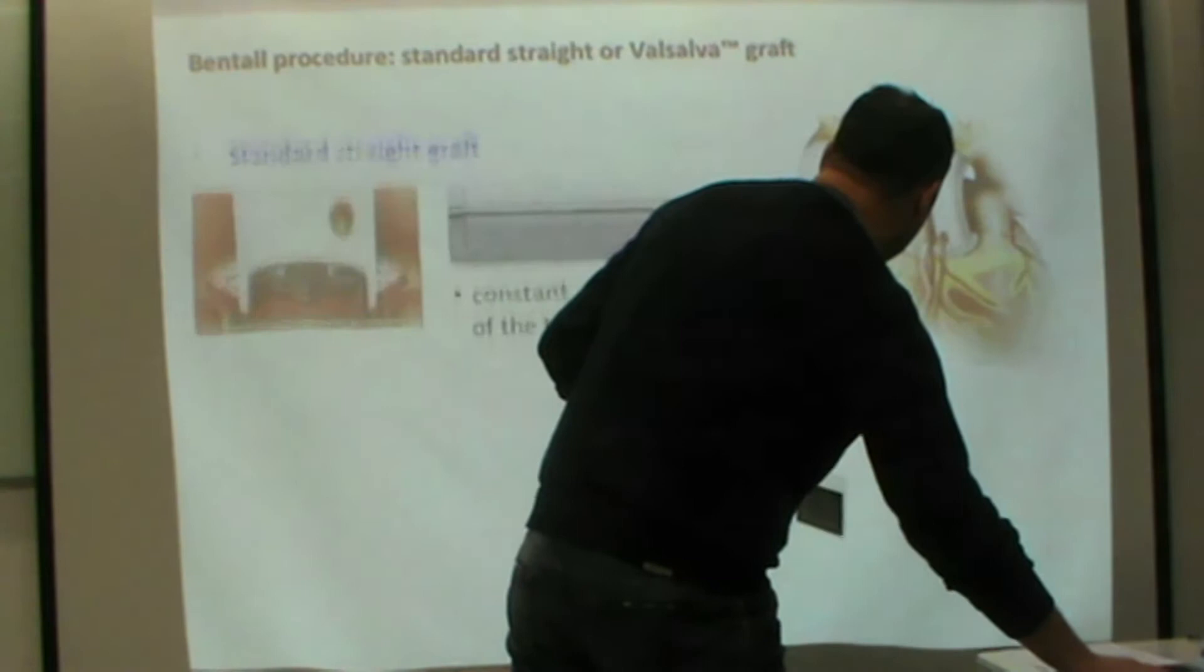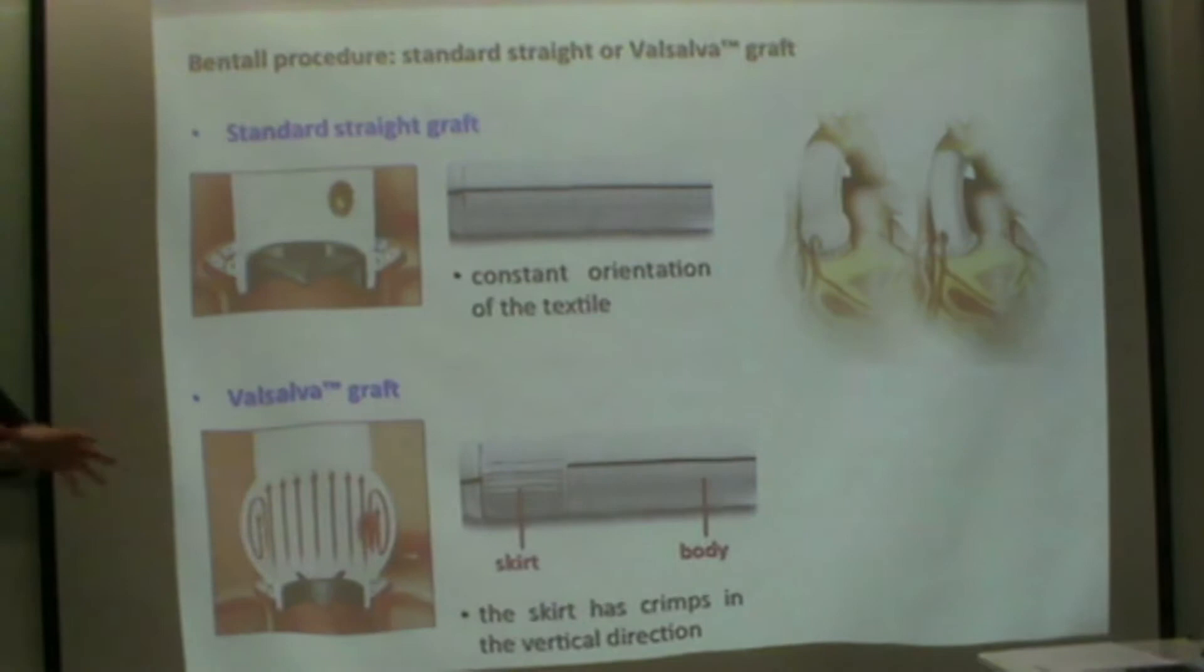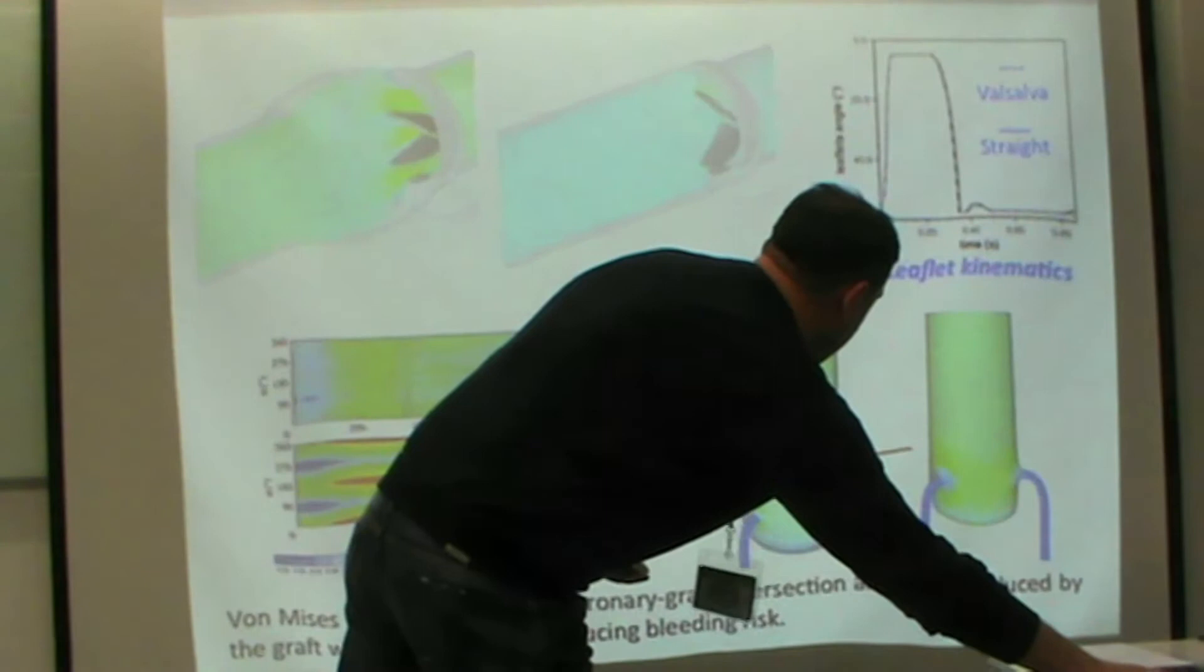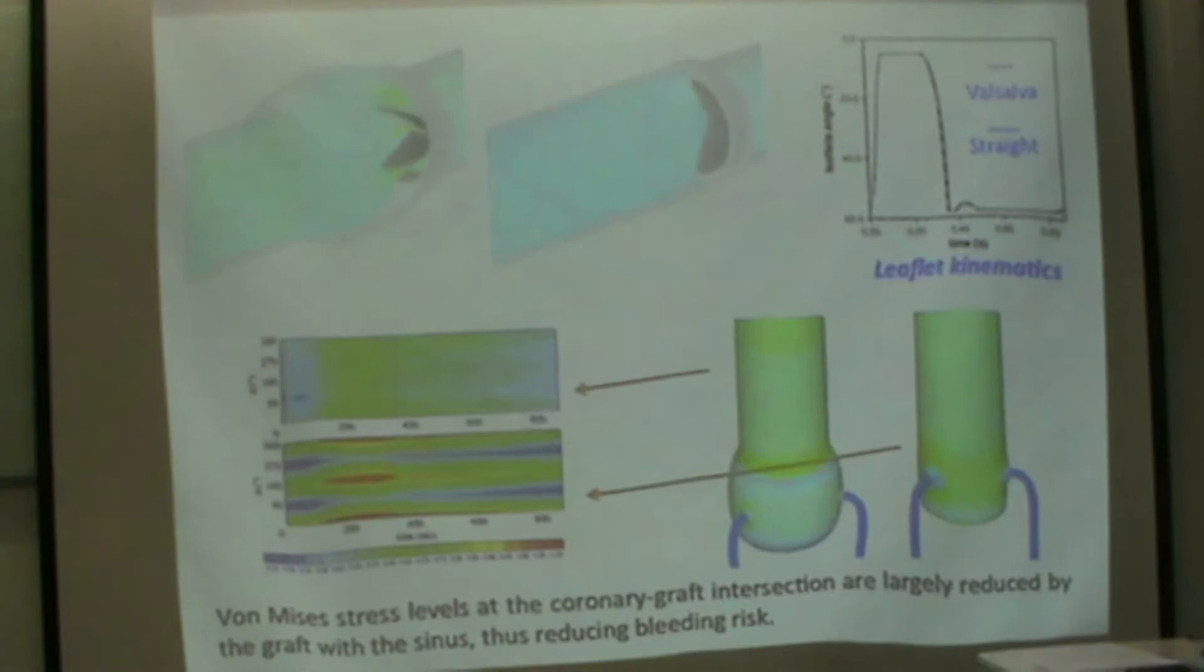We're simulating the Bentall procedure, the use of different grafts when the aortic channel is damaged. We can have a straight graft or a graft that bulges with the sinuses of Valsalva, usually done with a mechanical valve. Here the structure is deforming, and we can evaluate the stresses where the two coronary arteries are connected. In this case, most of the stress is concentrated here, so this should be better than the straight tube that is used now.